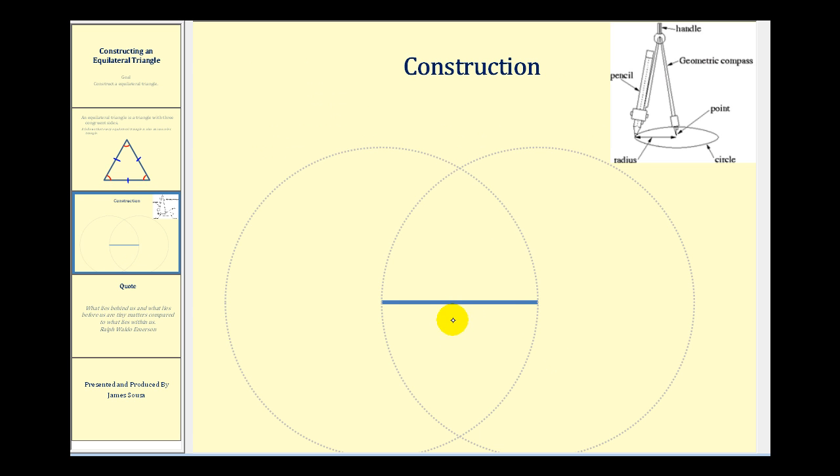The first step is to start with a segment with a given length as we see here. This will be the length of each side of the equilateral triangle.